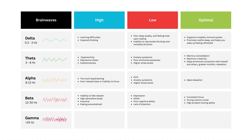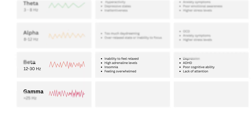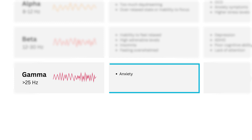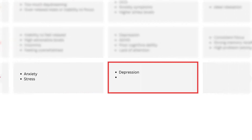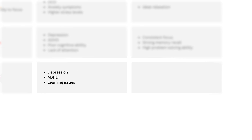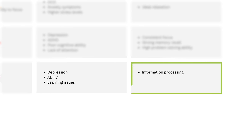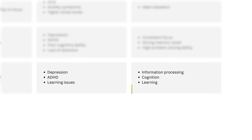Gamma waves can also be observed in highly concentrated states of meditation, which is why many people experience their mind expanding while meditating. High levels of gamma waves correspond to anxiety and stress, whereas low levels correspond to depression, ADHD, and learning issues. When gamma waves are in the optimum range, it corresponds to information processing, cognition, and learning.